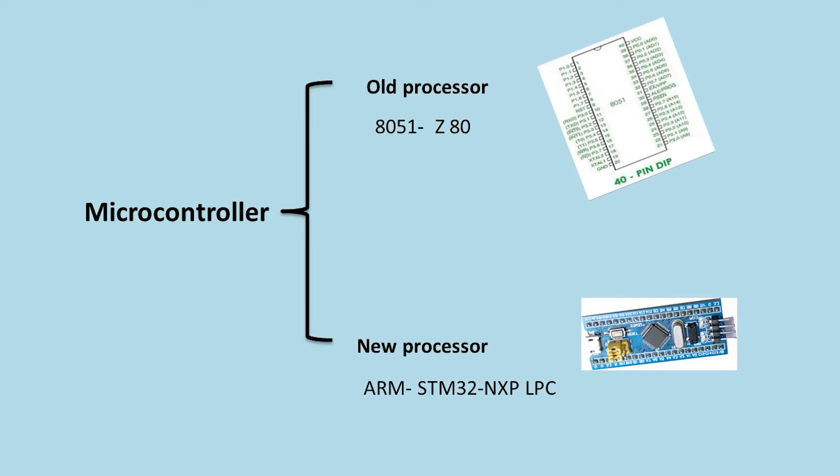So how can you add RTC easily? You can add an external module. These older processors don't have an RTC, so you add the module. But newer processors like the STM32 or ARM-architecture microcontrollers have RTC built inside them. You just add an external crystal and you can use it easily.